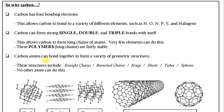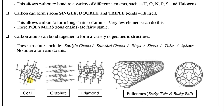Lastly, carbon atoms can bond together to form a variety of geometric structures such as coal, graphite, diamond, and fullerenes. In each of these cases the only atom involved is carbon, and yet depending on how carbon is assembled we have totally different physical and chemical properties — diamond versus coal. They're both carbon and yet they have totally different physical properties.